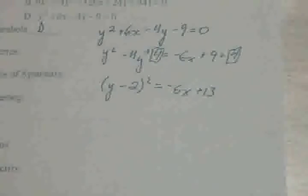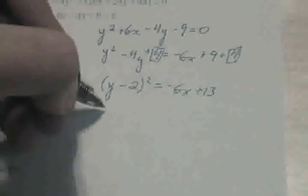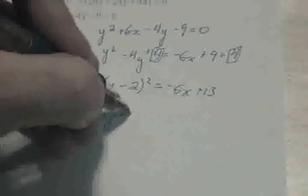The only thing left to do is on the right hand side where we need to convert this into standard form. y minus 2 squared equals negative 6 times x.